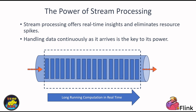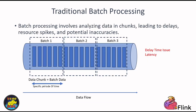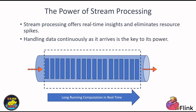To understand this better, let's compare it to batch processing. In batch processing, data is logged periodically, often hourly, and analyzed later. This leads to delayed results, resource spikes, and potential inaccuracies when a session crosses those artificial boundaries. In stream processing, we avoid these issues — we process data as it arrives, ensuring timely insights, a smoother resource load, and correctness in results. The key here is how we manage state, a critical aspect we'll explore further in this course.